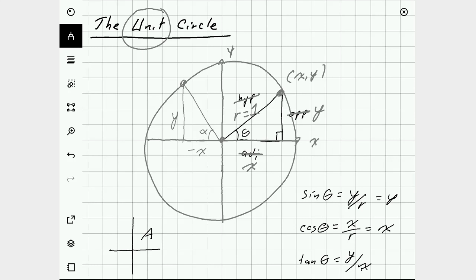In the second quadrant, y is still positive, but x is negative, which means looking at our definitions here, sine is still going to be positive, cosine and tangent will be negative.